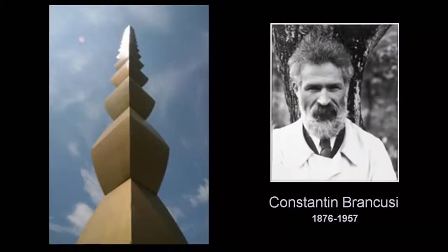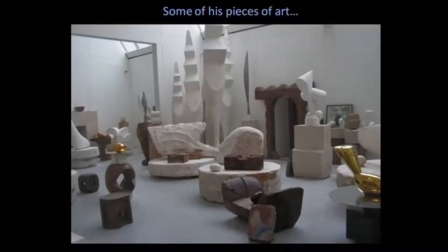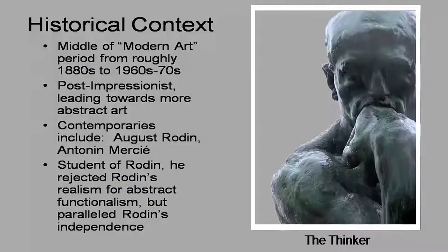Our next sculptor in this lecture is Constantin Brancusi. He worked in the later part of the 19th century as well as throughout the first two quarters of the 20th century. Even a brief look at his studio and the pieces lying in it makes clear that this artist is also very much interested in abstraction. Though like Henry Moore he also had realistic references in mind, the central focus was not on realistic representation but on the abstract essence of forms.